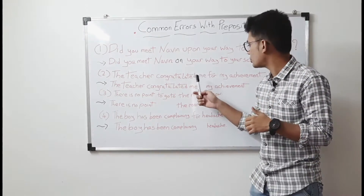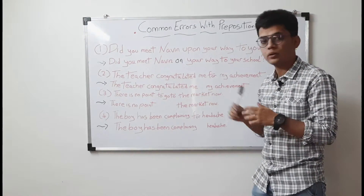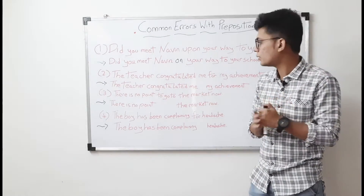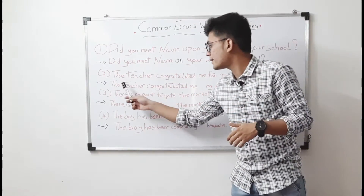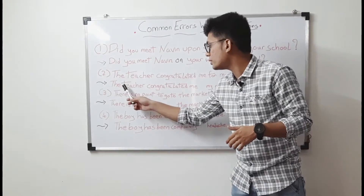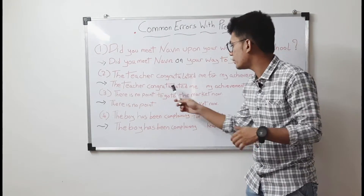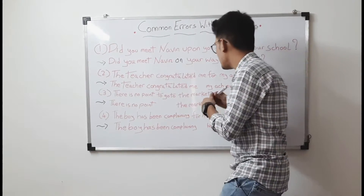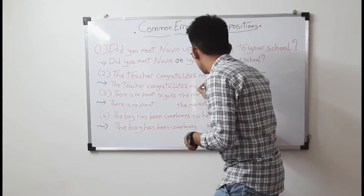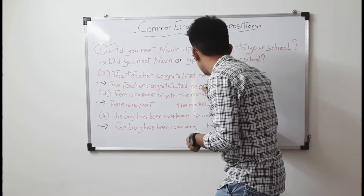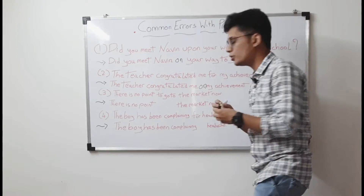Let's look at the second sentence: 'The teacher congratulated me for my achievement.' In this sentence, the preposition 'for' is not correct. The correct sentence will be: 'The teacher congratulated me on my achievement.' — 'on' is the correct preposition in this sentence.